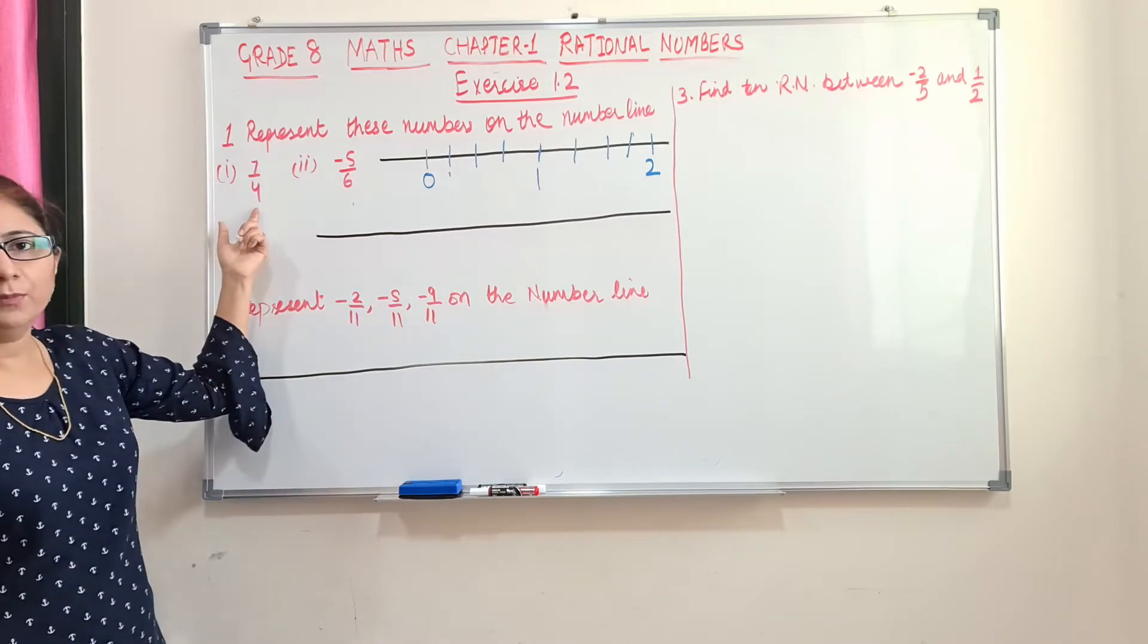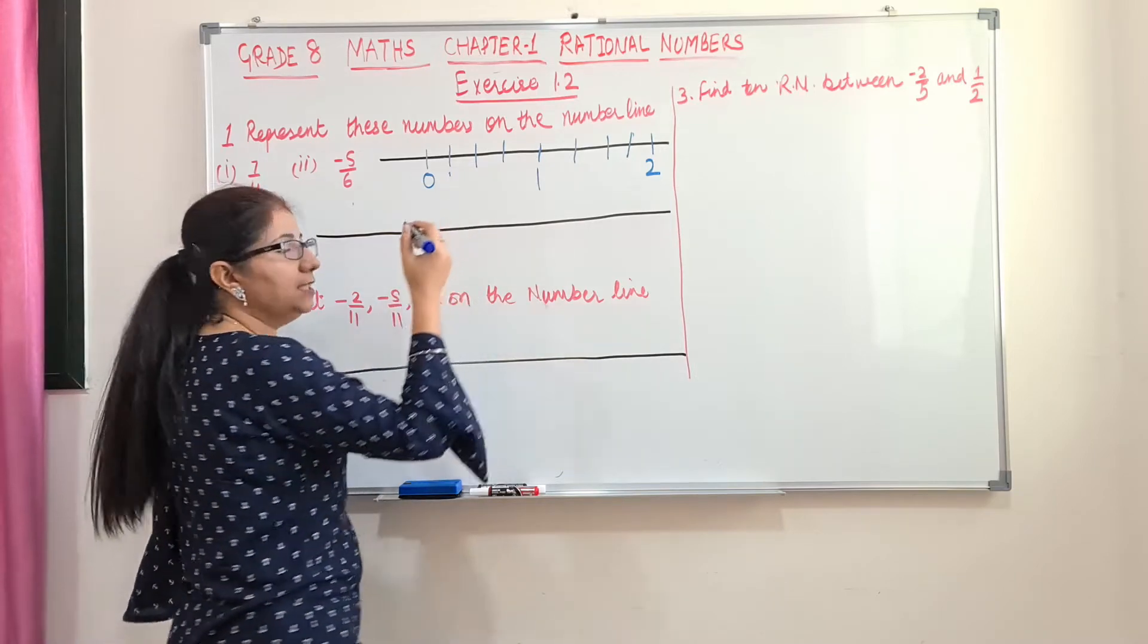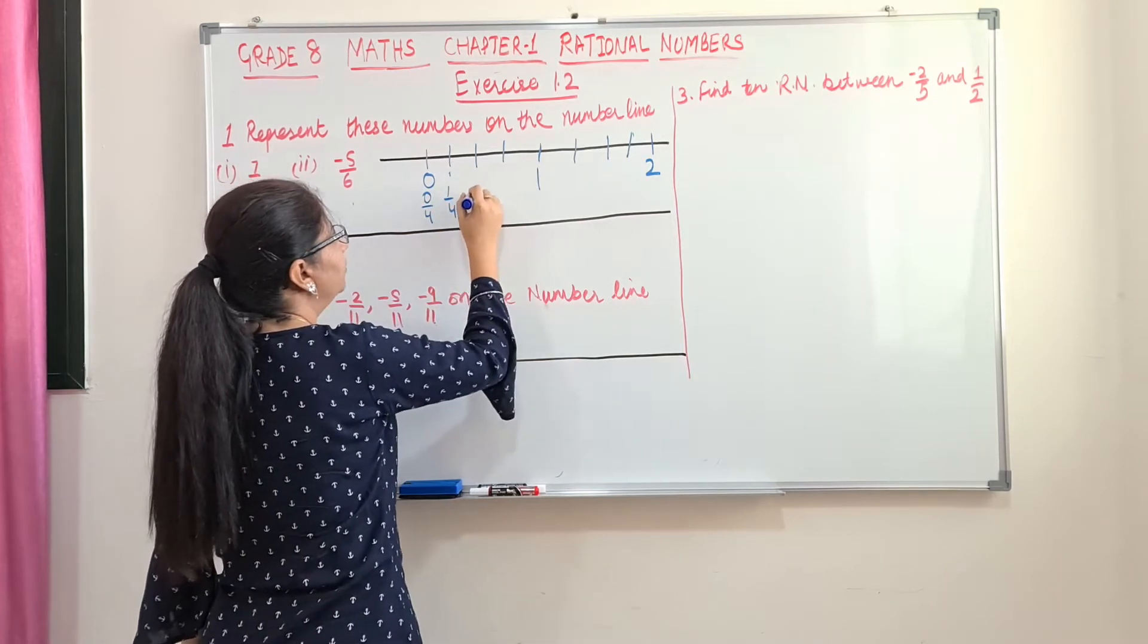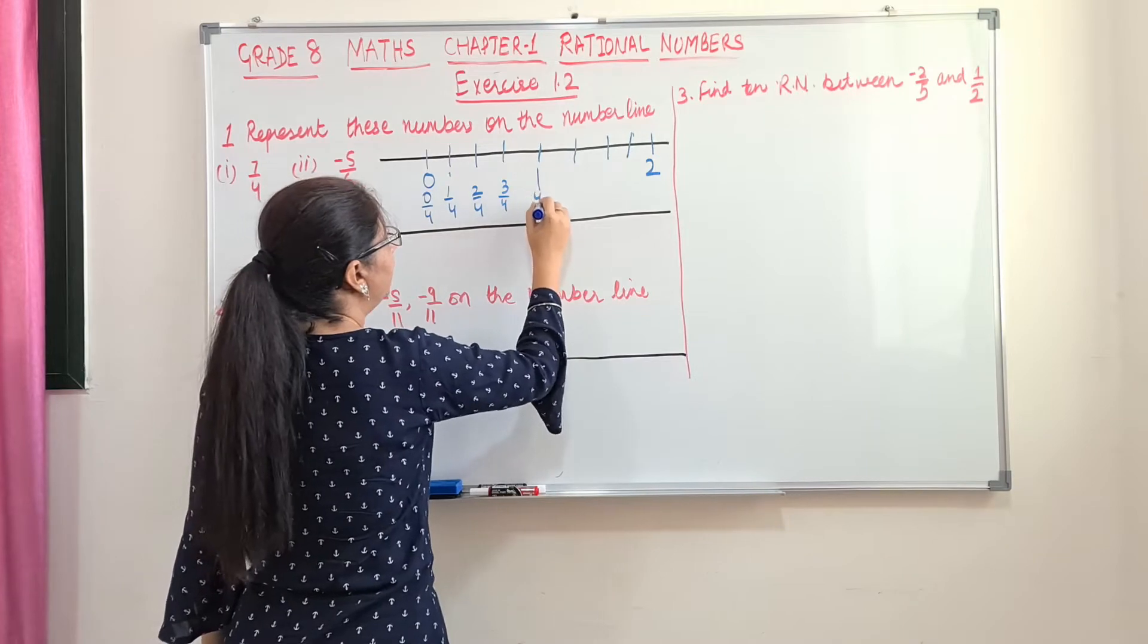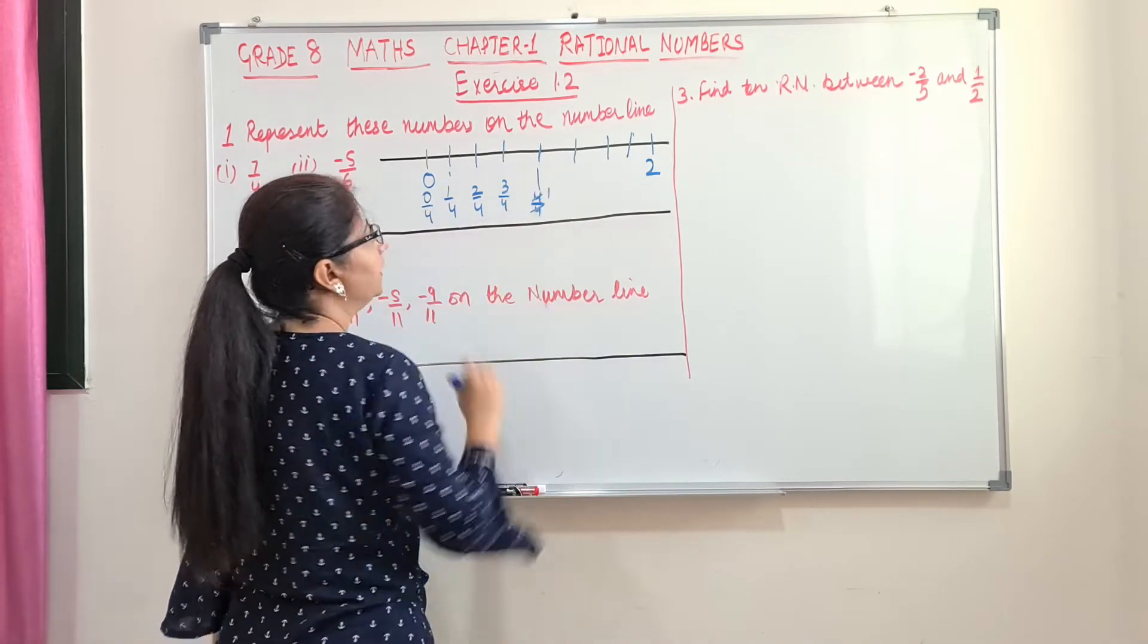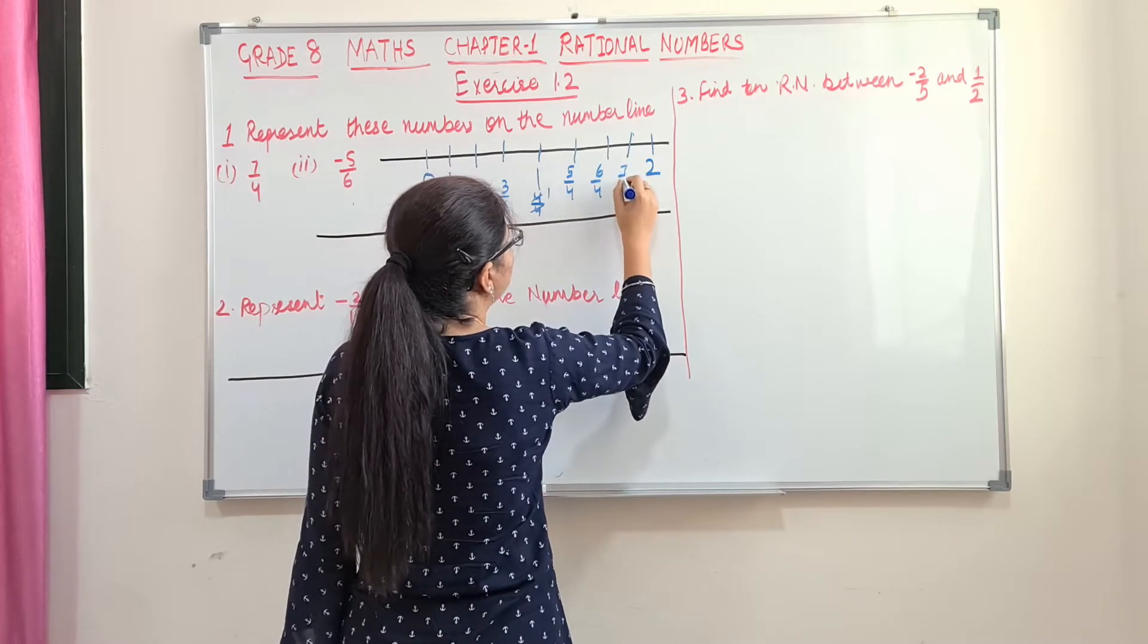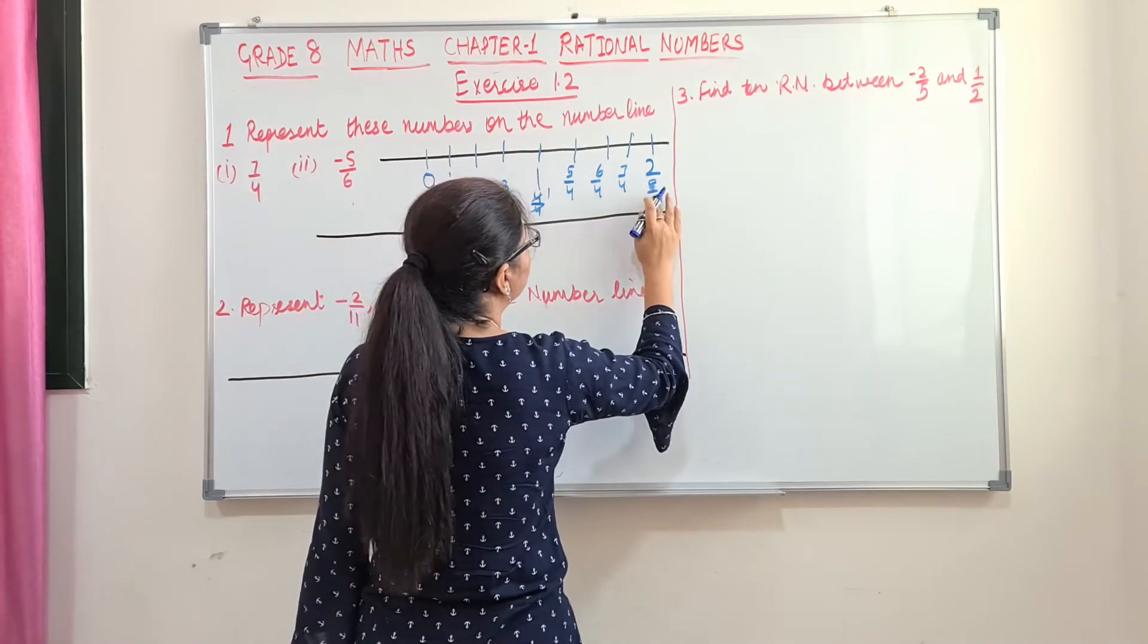So number is 7 by 4. So we will write the rational numbers first. That is, since we are dividing into 4 equal parts, this number will be 0 by 4, then 1 by 4, 2 by 4, 3 by 4 and 4 by 4. Okay, 4 by 4 will get cancelled, that is 1. Then again 5 by 4, 6 by 4, 7 by 4 and 8 by 4.